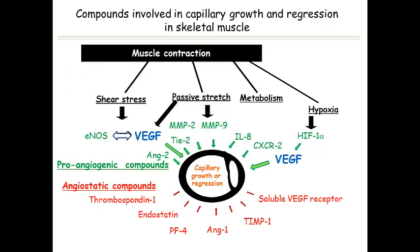The regulation of capillary growth in skeletal muscle is a complex and very well-regulated process that involves a number of physiological signals, of which some are mechanical in nature, including shear stress and passive stretch of the muscle, both of which are inherent to exercise. Angiogenic signals also originate from changes in metabolism and from hypoxia. The effects of these physiological signals are mediated by a large number of angiogenic compounds that promote capillary growth, and compounds that modulate or inhibit capillary growth — angiostatic compounds.